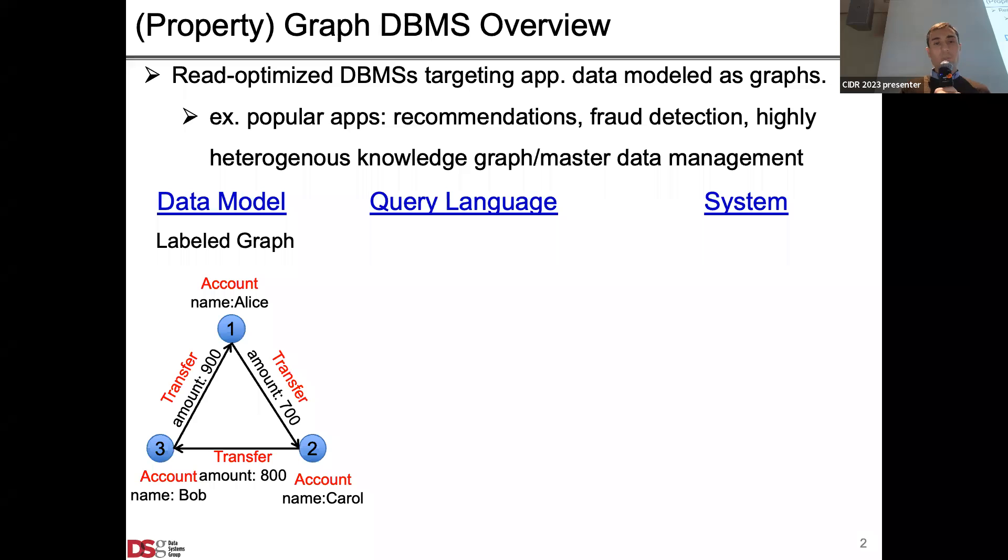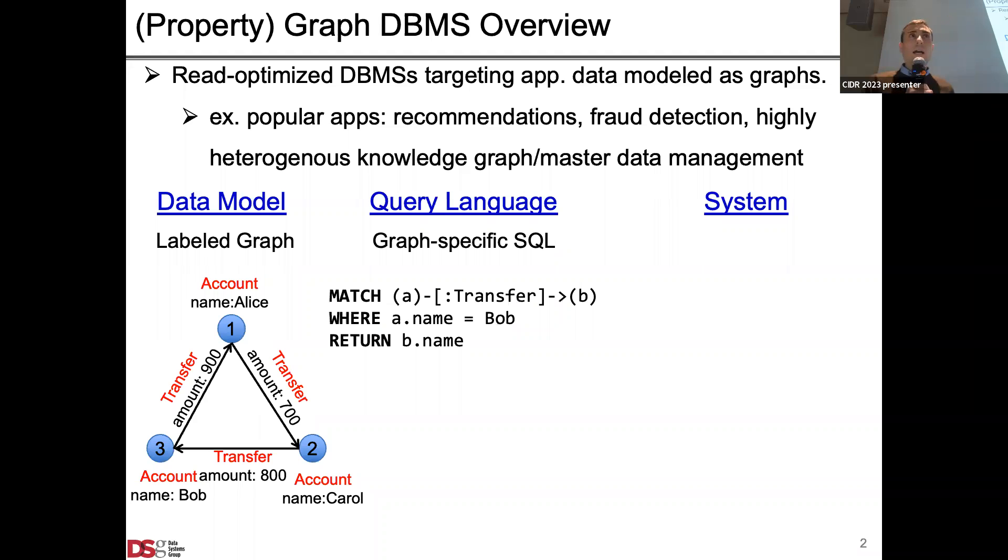In terms of their data models, the data model is called property graph model where records are modeled as a set of labeled nodes and edges and key-value properties on these nodes and edges. In terms of their query language, I call these query languages the graph specific SQL. Here's a snippet from the Cypher query language, which is the language of the commercial leader Neo4j, where instead of a select-from-where there's a match-where-return, indicating joins, filters, and projections and group-bys.